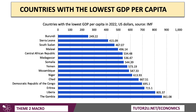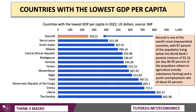On the other scale, these are the countries in the world with the lowest per capita GDP in 2022. All of them had a per capita GDP of less than $1,000 according to the IMF's data. Burundi is one of the world's most impoverished countries, with nearly 90% of the population living below the World Bank's poverty measure of $2.10 per day. There is vast reliance on farming, often subsistence farming with little surplus output, and a youth unemployment rate of more than 65%.